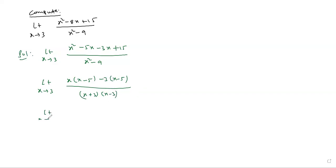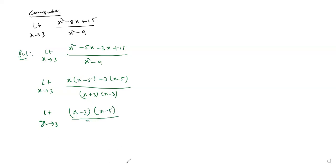Now, limit as x extends to 3: the expression becomes (x - 3)(x - 5) divided by (x + 3)(x - 3). The common factor (x - 3) in the numerator and denominator gets cancelled, leaving (x - 5) / (x + 3).